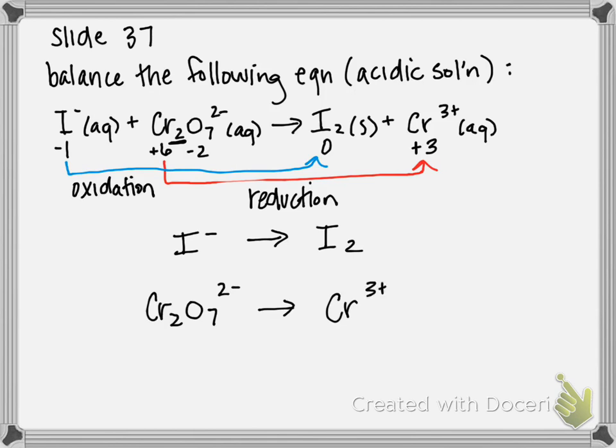So now the second step is to balance the elements other than hydrogen and oxygen. And in this one, we actually do have to balance. So in our oxidation and reduction, we actually have to do it for both. In our oxidation, we have one iodine on the reactant side and two on the product side.